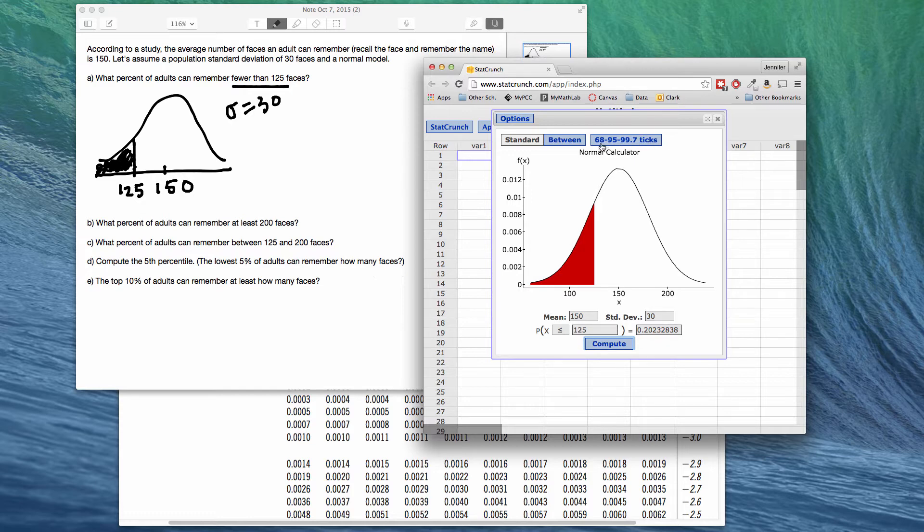Notice that it also gave us the normal model, centered at 150, and then it actually wrote out the axis with a scale of about 30. If we wanted to, we could put the 68, 95, 99.7 marked ticks. So that means the first standard deviation, the second standard deviation, and the third standard deviation from the mean. So it makes it a little bit nicer to look at because you have that 1, 2, 3 standard deviation from the mean scale written out for you.